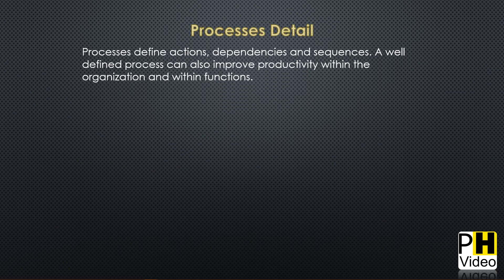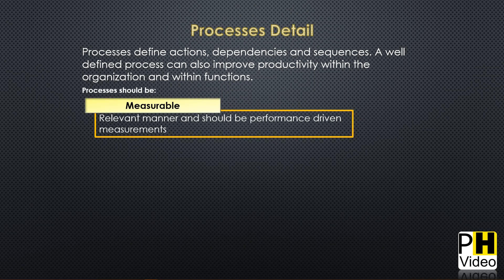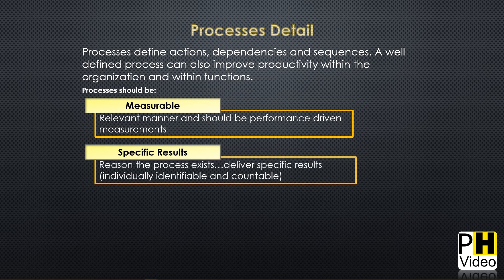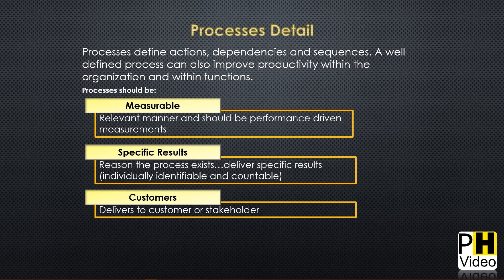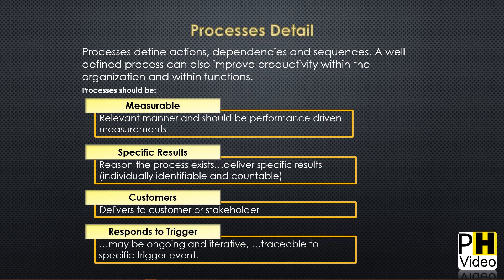Looking at a process in more detail: a process defines actions, dependencies, and sequences. A well-defined process can improve productivity within the organization. Processes should always be measurable — if you can't measure it, it's not a good process. A process should have a specific result, serve an identifiable customer or stakeholder, and be traceable to a specific trigger event. All processes must have a specific trigger event. If you have processes in your organization that don't meet all four of these criteria, I would highly recommend revisiting them.